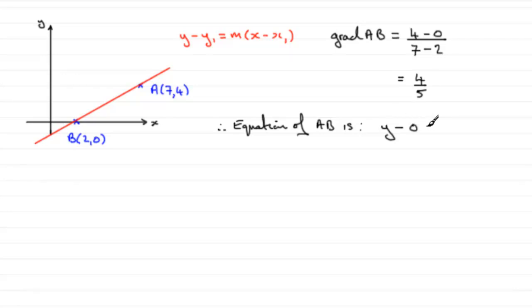So it's Y minus 0 equals M, the gradient, 4 fifths, bracket, X minus X1. So it's X minus 2. Okay, X1 being the 2 then.